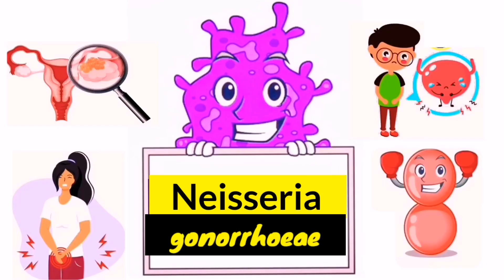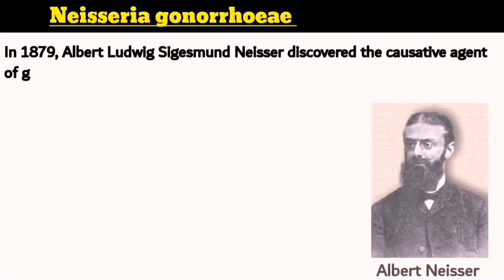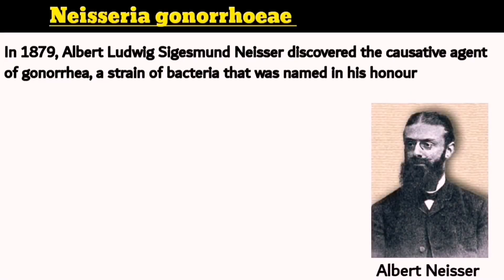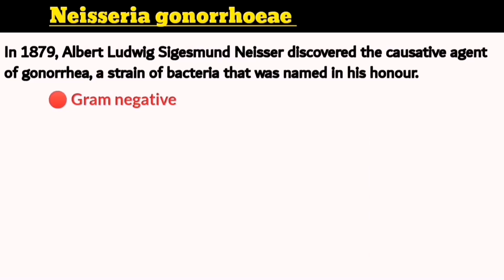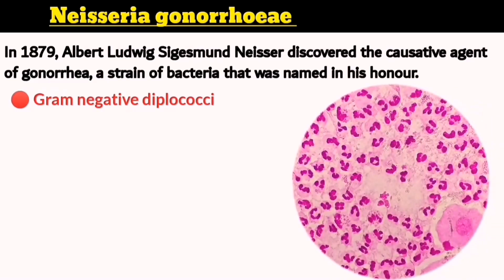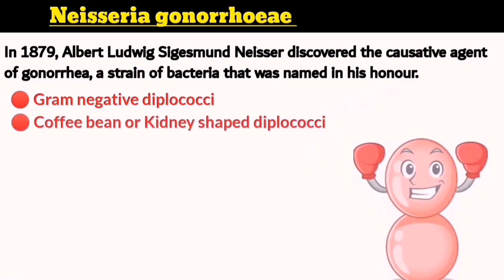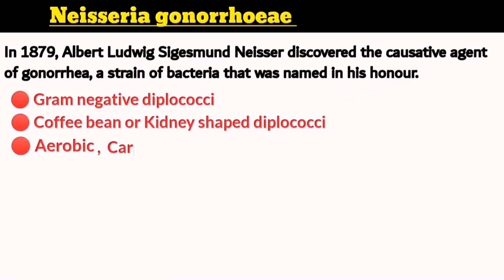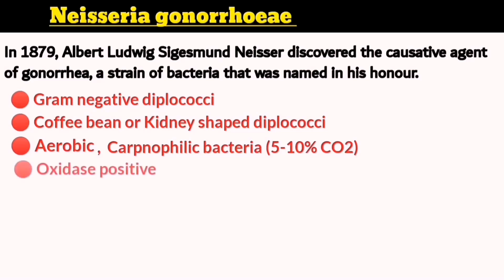In 1879, Albert Neisser discovered this bacterium and named it after himself. Neisseria gonorrhea is a gram-negative diplococci which appears in pairs as kidney or coffee bean shapes, and is characterised as being oxidase positive, aerobic and capnophilic, preferring to grow aerobically in around 5–10% CO2.